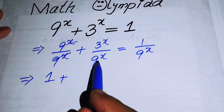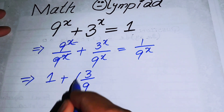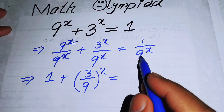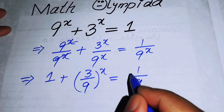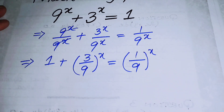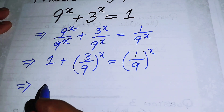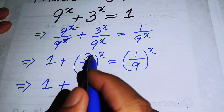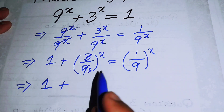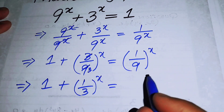We can combine the exponents of both terms, writing 3^x over 9^x. Since 3 times 3 is 9, the terms partially cancel, and we get 1 plus 1 over 3^x equals 1 over 9^x.